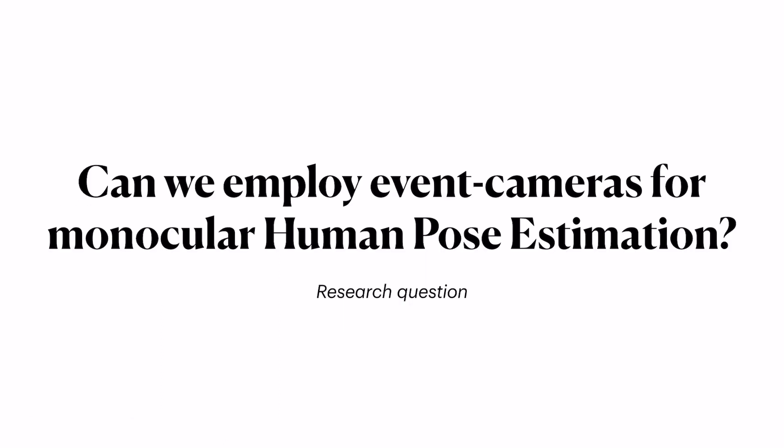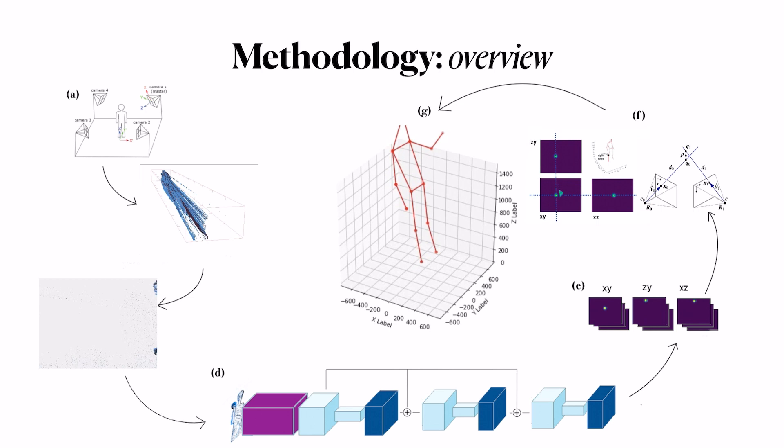And what is my research question during my master's thesis and what I try to solve is if we can employ event cameras for monocular human pose estimation. That's because this task is still new and under research because of the real-time involvement and the real-time moving part of the subject. What I'm using is a dataset made by the University of Zurich of four different points of view from different event cameras recording a subject moving in the scene, doing some actions like punching or jumping.